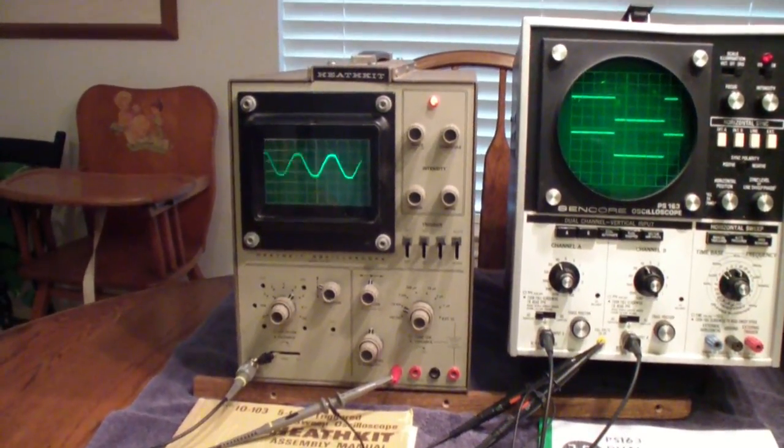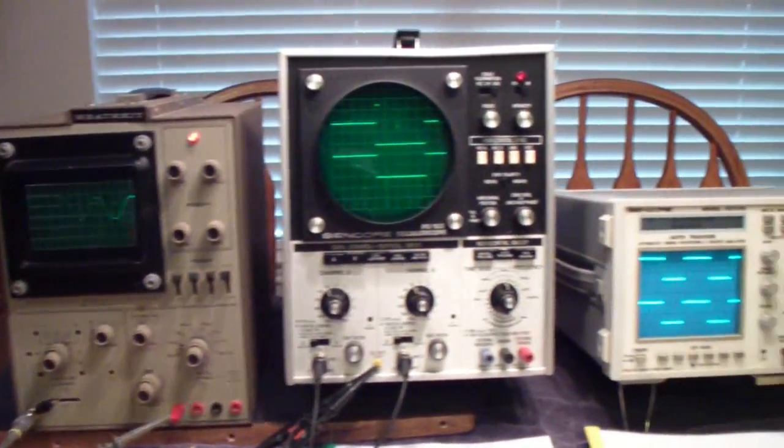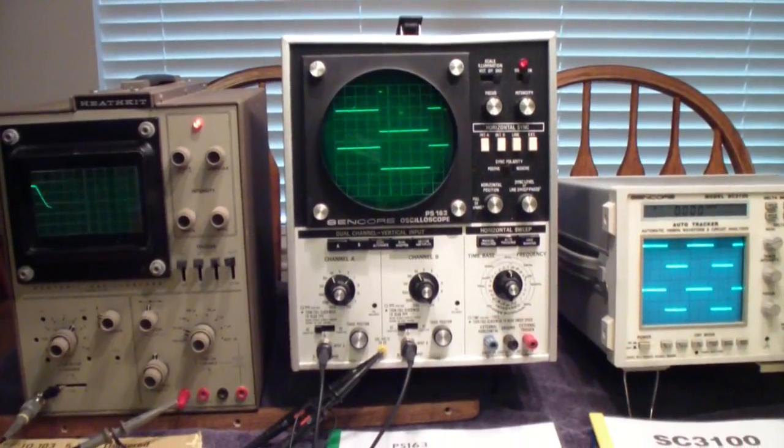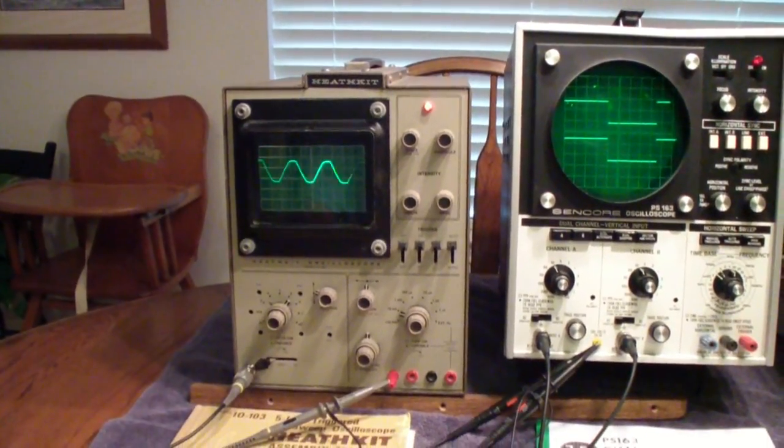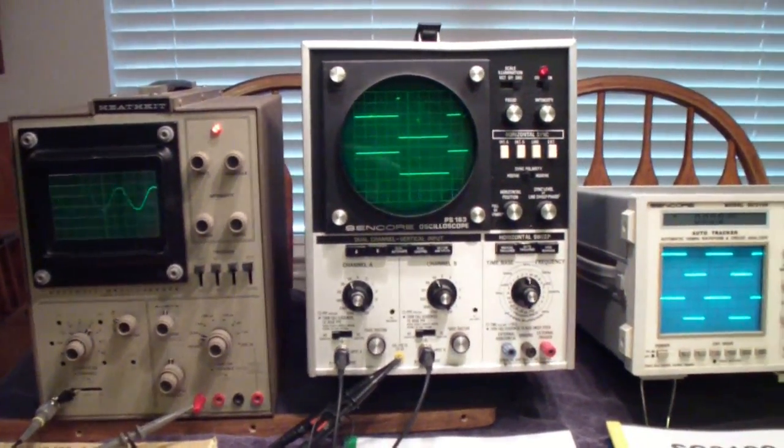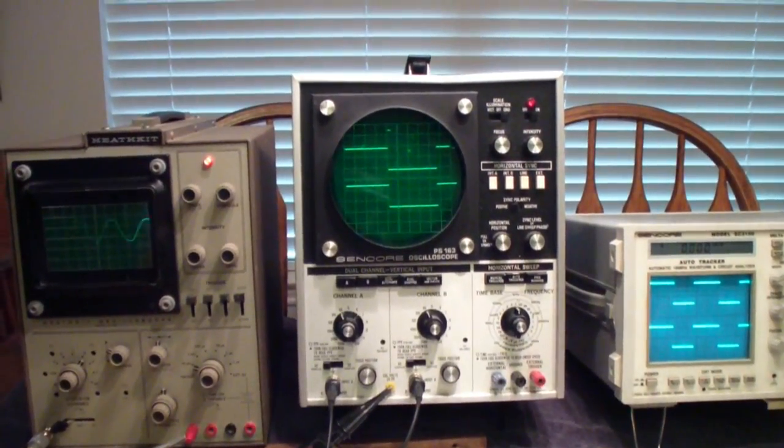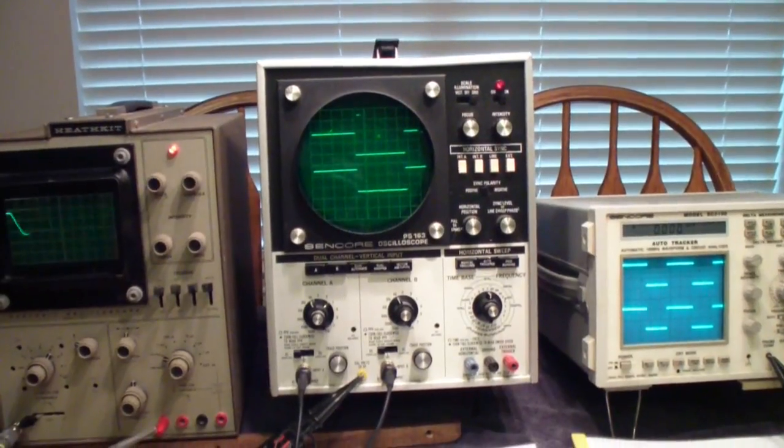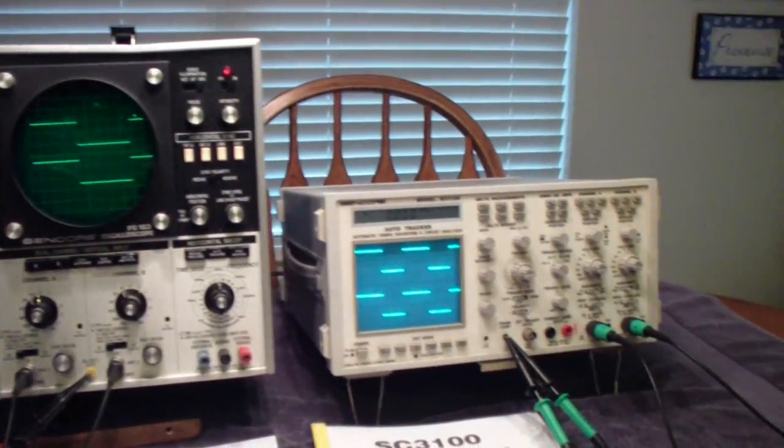The one on the left is the first triggered sweep oscilloscope that I ever owned. The 163 was sort of the transition from single trace, low bandwidth, often not even triggered, sometimes just synchronized sweep, to a full dual channel oscilloscope with triggered sweep and fairly wide bandwidth.